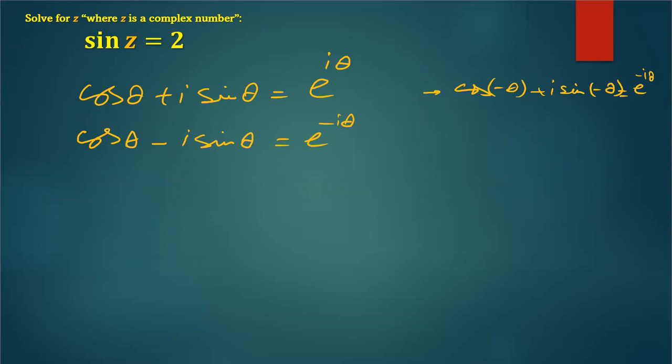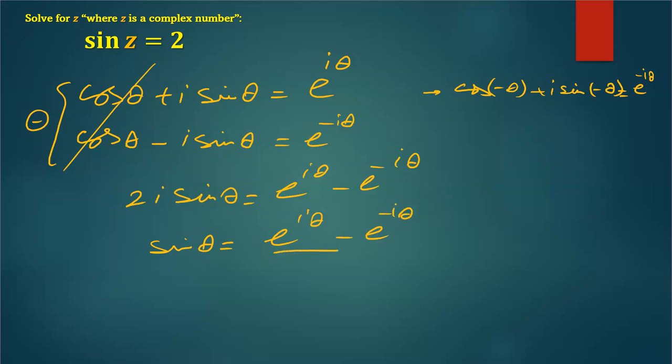Okay, I need only to isolate this sin θ. So I will subtract these two equations, so cosines will cancel this time, and I will have 2i sin θ equal to e^(iθ) - e^(-iθ). So sin θ equals (e^(iθ) - e^(-iθ)) / 2i.